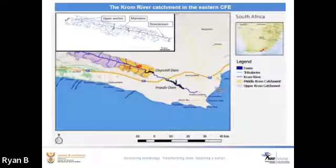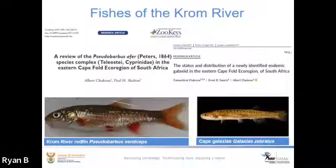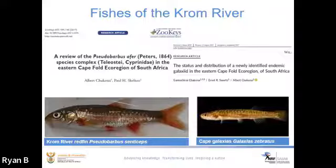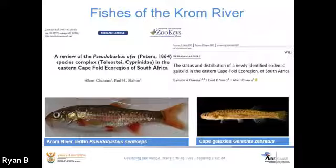The Gwang River system is one of the important river systems in the Eastern Cape Province, as it has been highly modified by the construction of weirs and impoundments. It contains three native freshwater fish species: Pseudobarbus anticeps, recently described by Chakona and Skelton from a review of the Pseudobarbus afer species complex, and Galaxia zebratus. The two taxa are listed under the threatened category of the IUCN Red List, whereby Pseudobarbus anticeps is listed as critically endangered and Galaxia zebratus is listed as endangered.